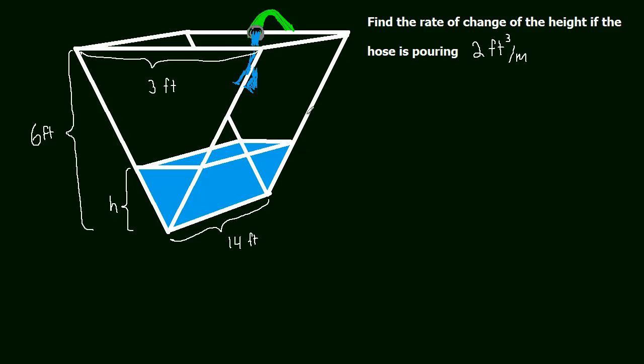Alright, so let's take a look at this problem here. We have to find the rate of change of the height of the water level if the hose is pouring 2 feet cubed per minute. And how are we going to do that? Well again, we have volume. We know how much volume is being poured in. So we're going to have to relate volume to height again. Very similar.